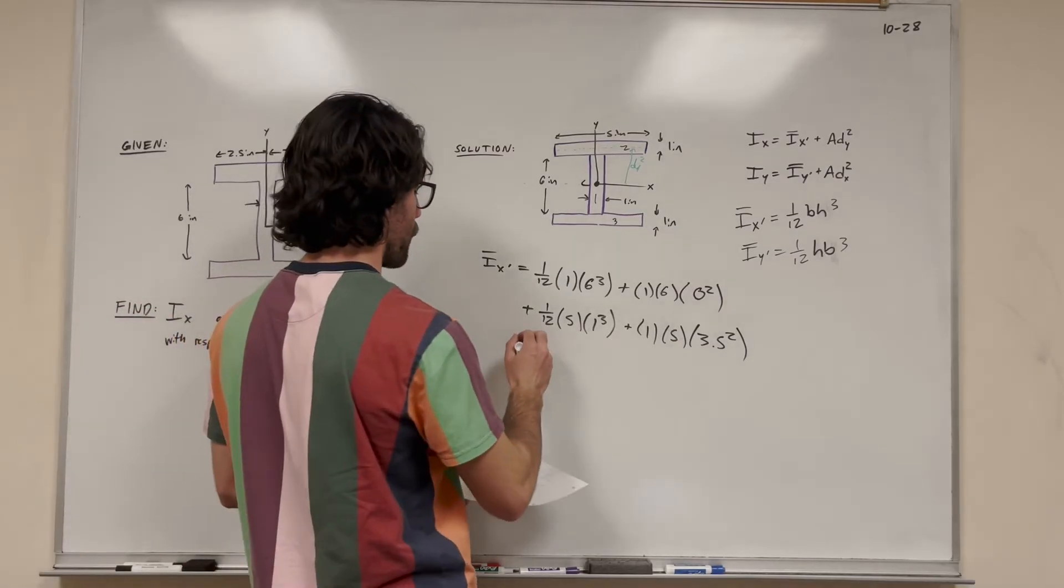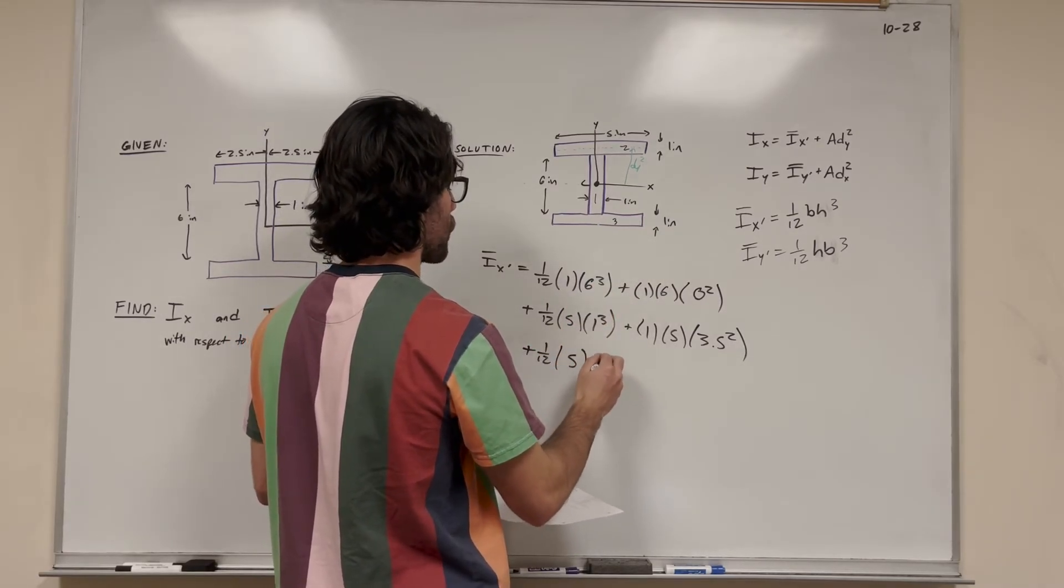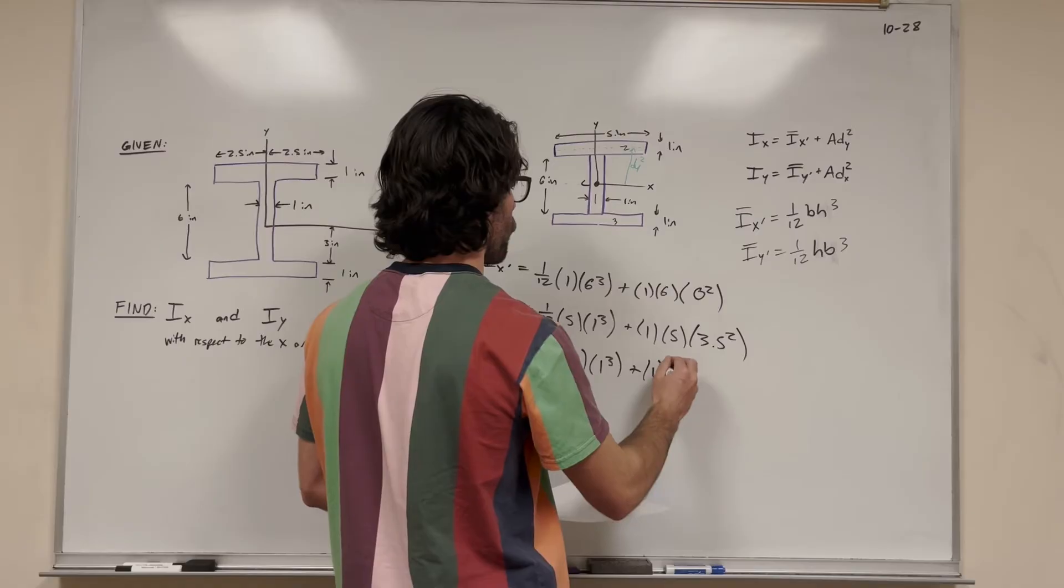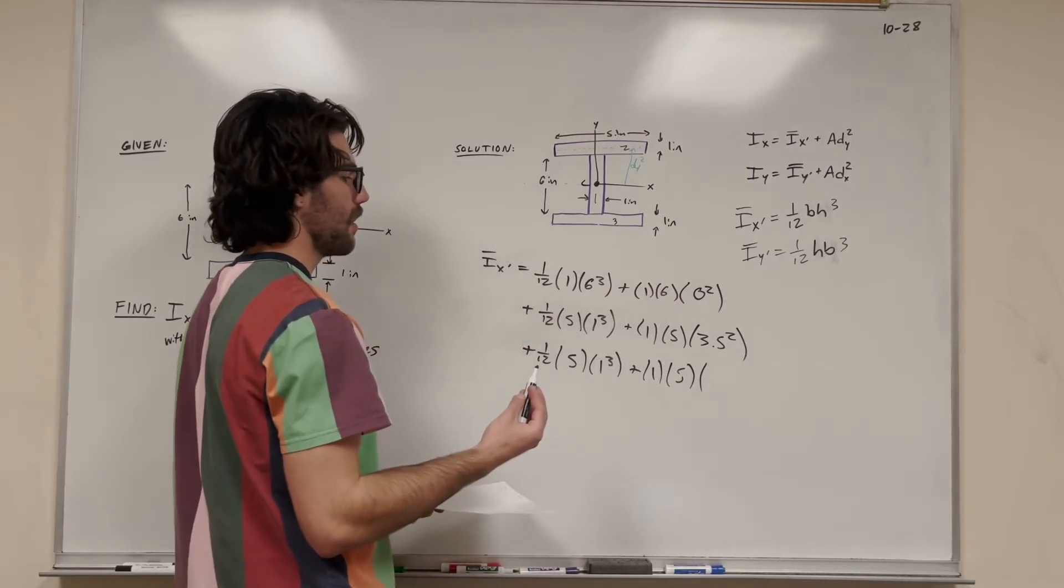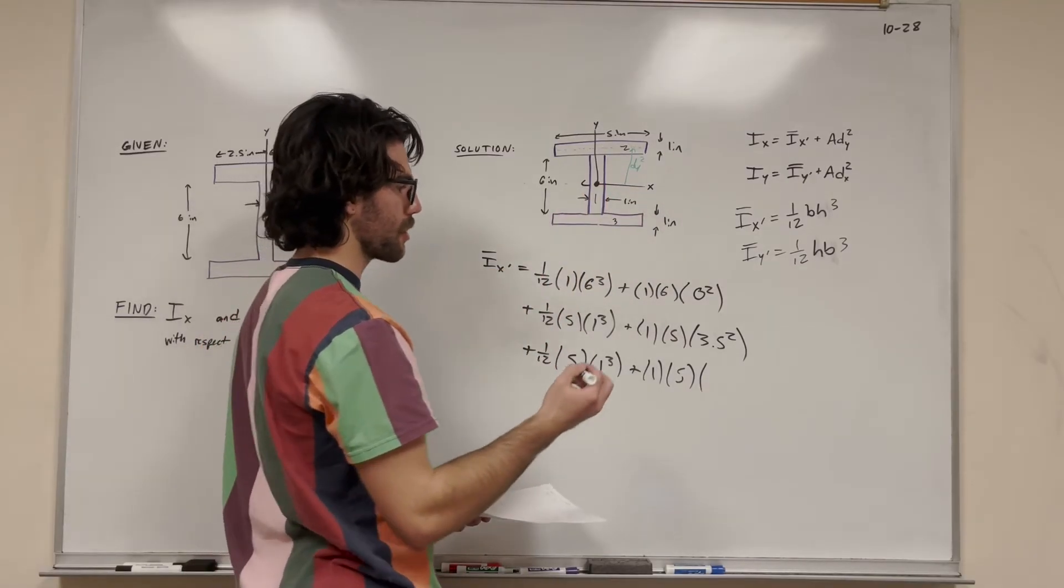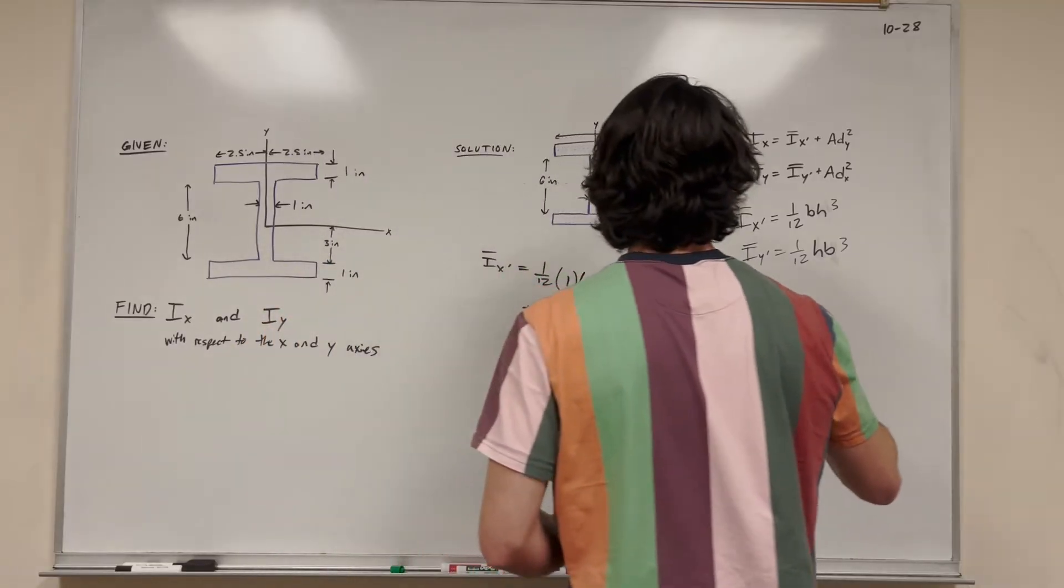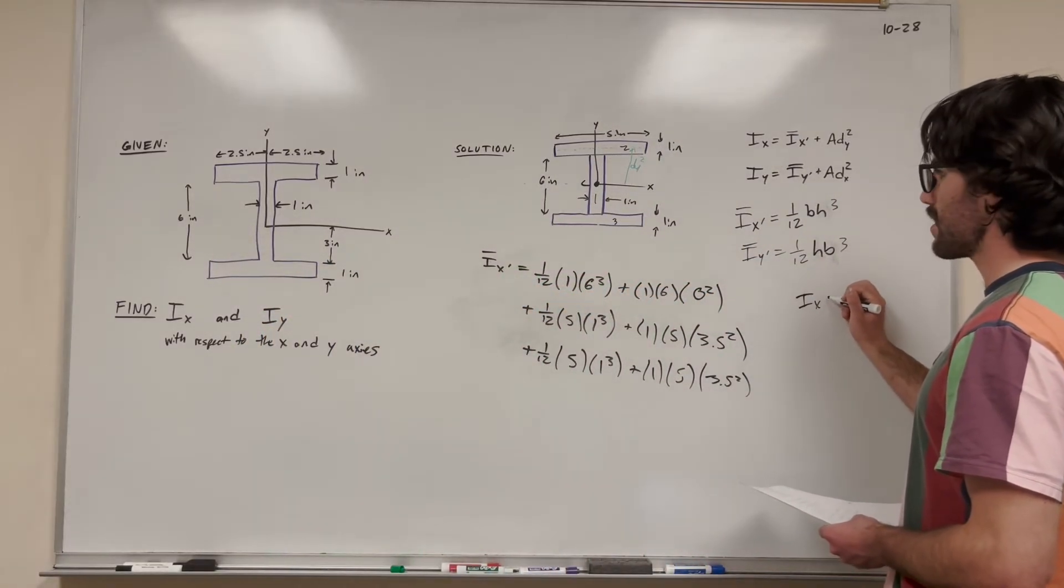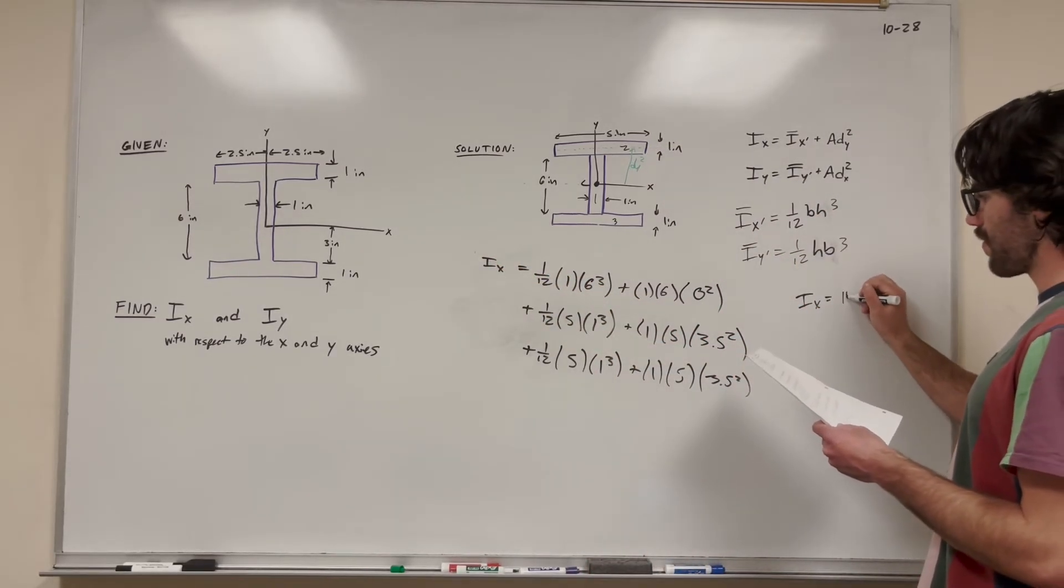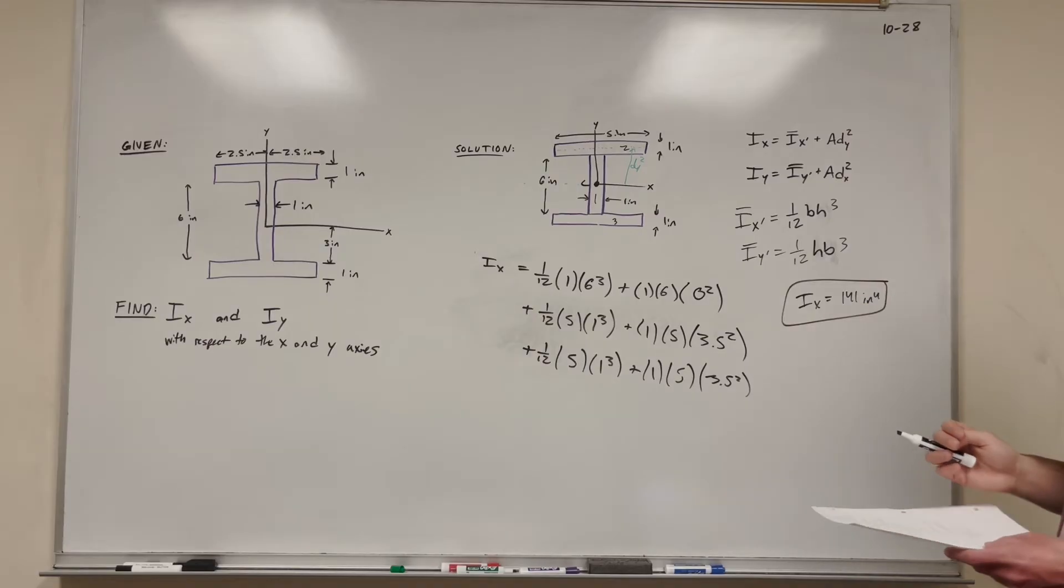So for shape 3: base is 5 inches, height is 1 inch. We add 1/12 times 5 times 1 cubed to its area, 1 times 5, times distance y squared. This time instead of going up, we're going down, but the shape is symmetric, so it's also 3.5 squared. If we do this, we find that Ix equals 141 inches to the fourth. And there we go, we found Ix.